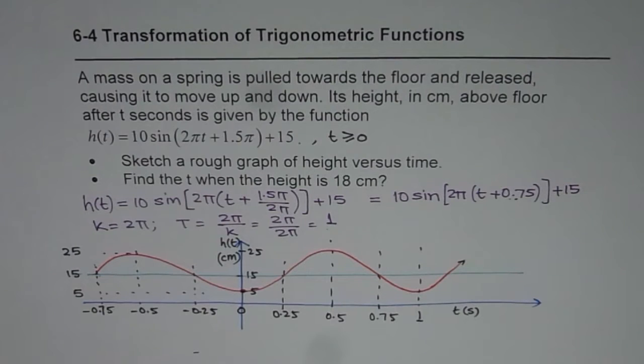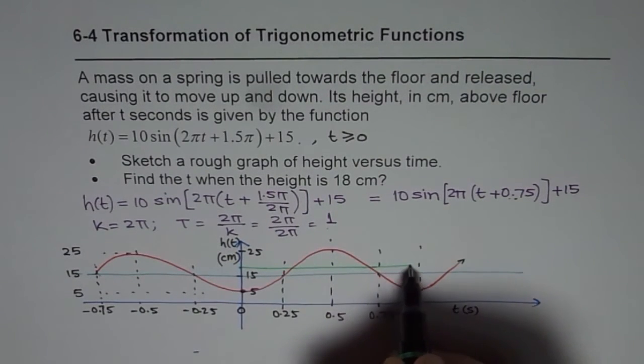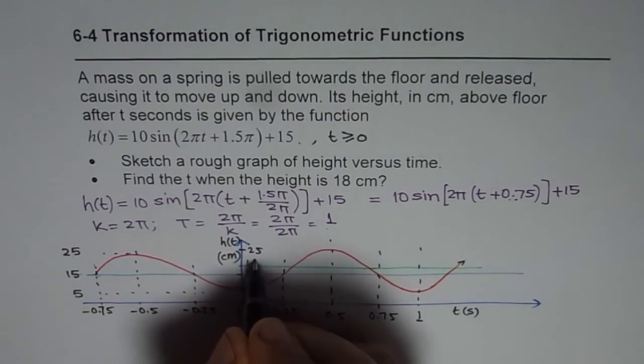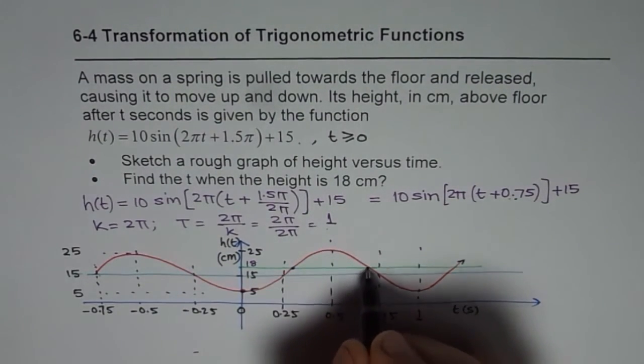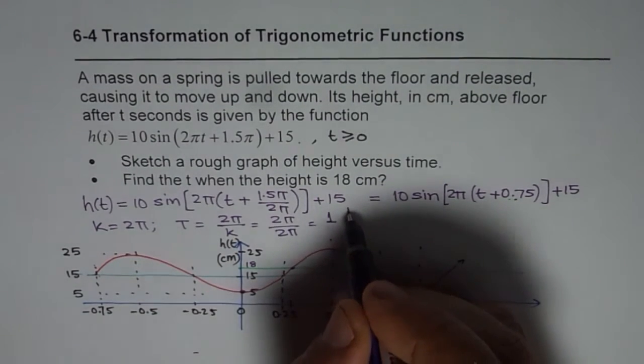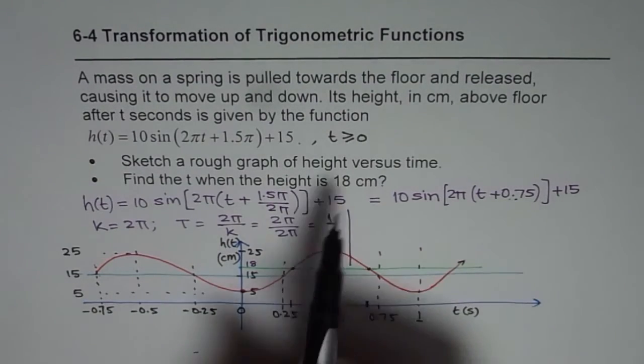Second part is find the t when height is 18 centimeters. So that means I have to draw a line at 18 centimeters. And then we will figure out what is this height. So 18 is more than 15. So that means somewhere here. So this is my 18 centimeters. So we are looking for these points as solution. We know the solution is close to 0.25 higher side, less than 0.75. From the graph we get this kind of solution. We need to find that solution.